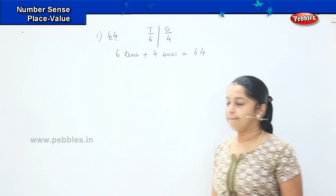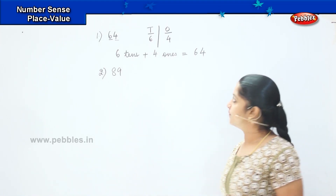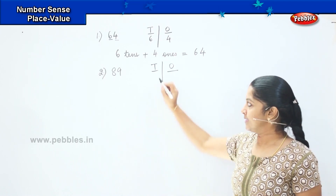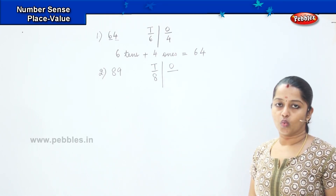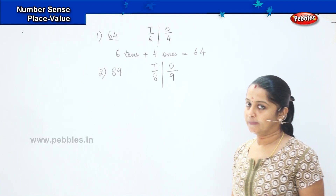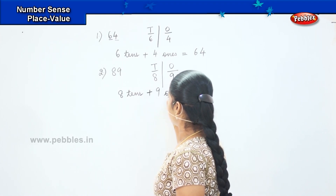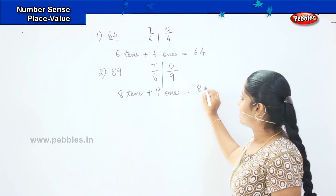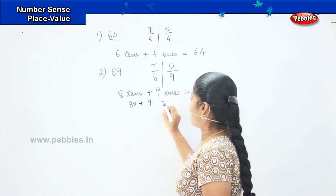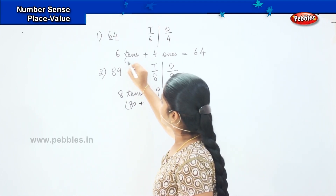Shall we do the next sum? Your next number is eighty-nine. The first step is T and O. Eight will come in T and nine will come in O. How can you write it in expanded form? It's eight tens plus nine ones equals eighty-nine. Eight tens denotes eighty plus nine ones denotes nine, so eighty plus nine equals eighty-nine. Similarly, six tens represents sixty, so sixty plus four equals sixty-four.